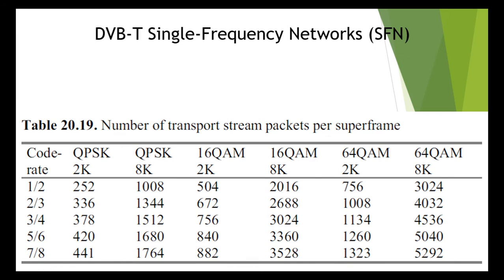One super frame in DVB-T accommodates an integer number of MPEG-2 transport stream packets. Look at table number 19 — the number of transport stream packets per super frame are given for different code rates in QPSK, 16-QAM, and 64-QAM, in both 2K mode and 8K mode.